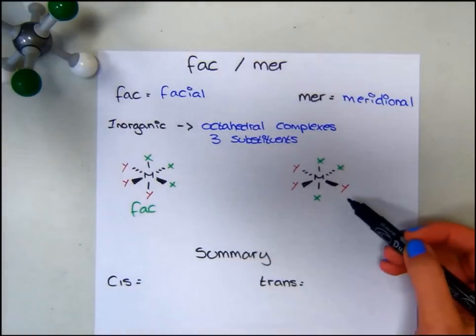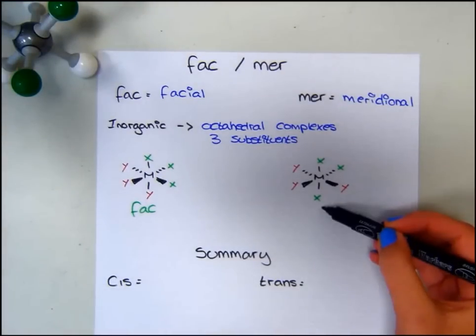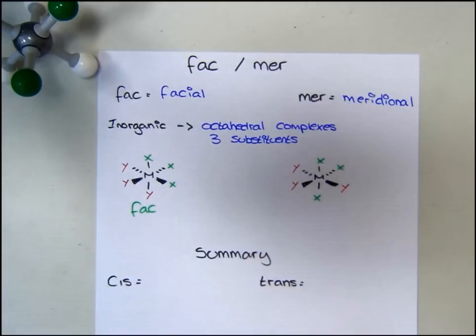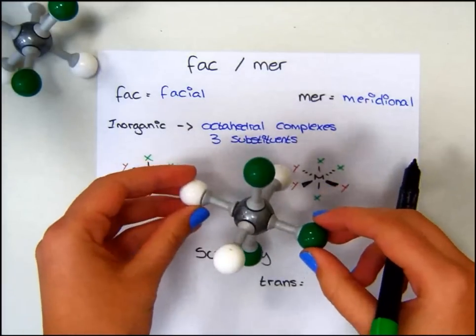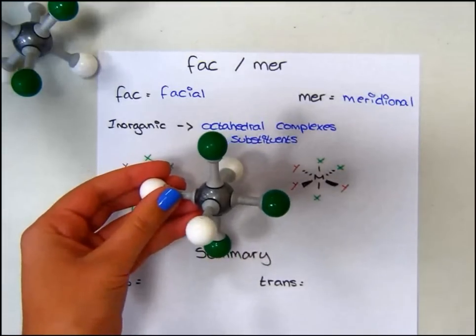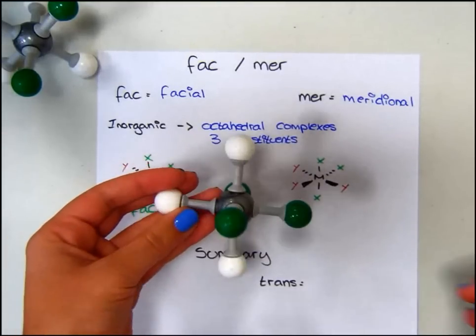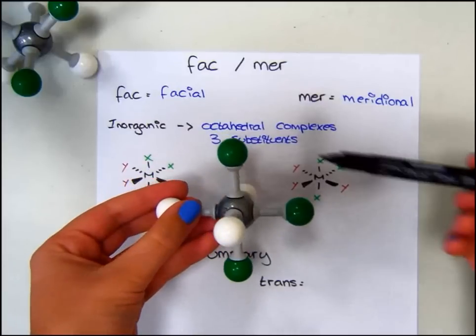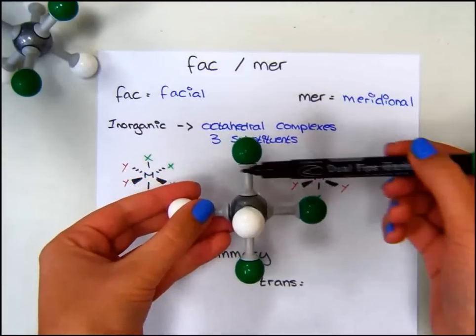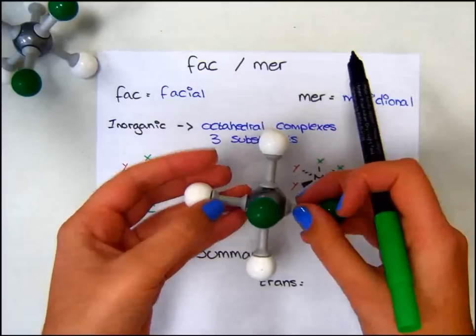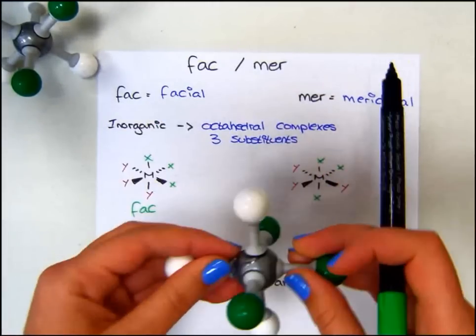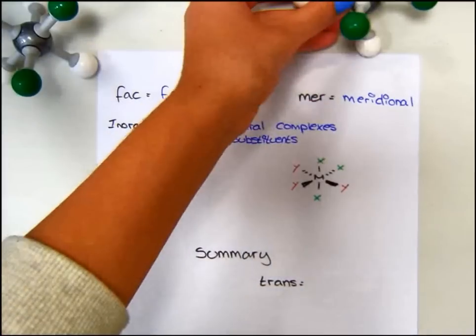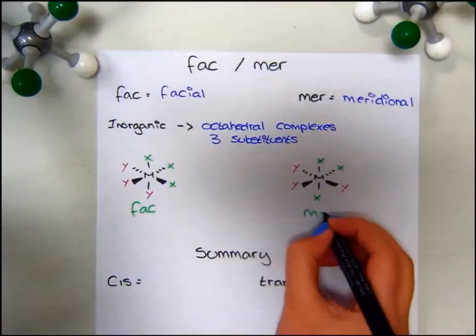We can now look at this isomer, where we will see two X's here and one down here, and two Y's here and one across here. In 3D, that will look something like this. As you can see, they are no longer on the same face, but instead, all the X's are on this plane, crossing through the metal, and rotating, we can see that all the Y's are on this plane, crossing through the metal. This allows us to label this isomer as the mer.